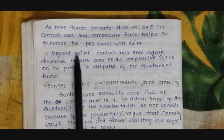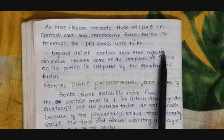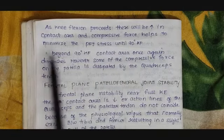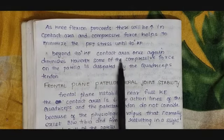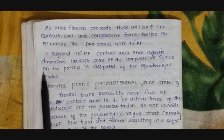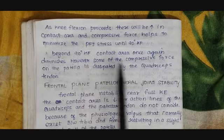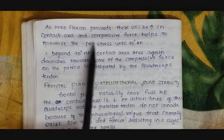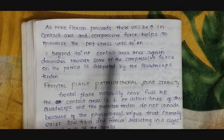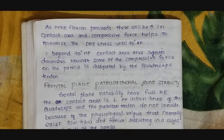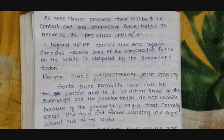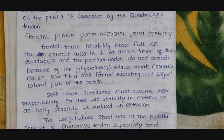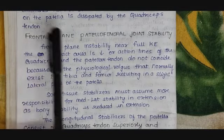Beyond 90 degrees of knee flexion, the contact area once again diminishes. However, some of the compressive force on the patella is dissipated by the quadriceps tendon. So beyond 90 degrees of knee flexion, the quadriceps tendon helps in dissipating patellofemoral joint stress.